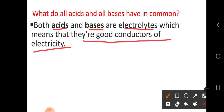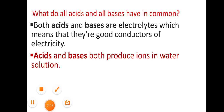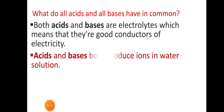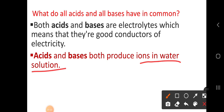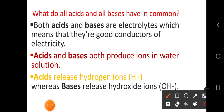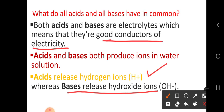The main common thing is that acids and bases are both electrolytes, as well as they produce ions in water solution. Acids produce H⁺ ions and bases produce OH⁻ ions. So acid releases hydrogen ions (H⁺), whereas bases release hydroxide ions (OH⁻). Both are good conductors of electricity.